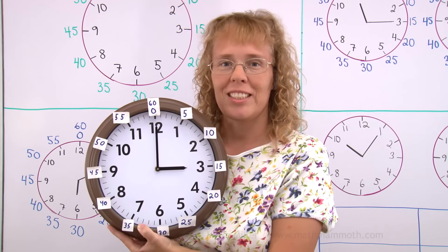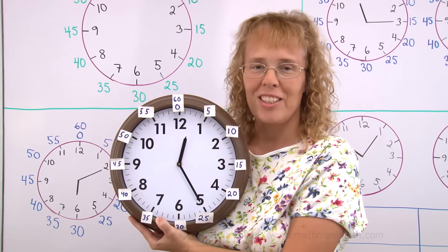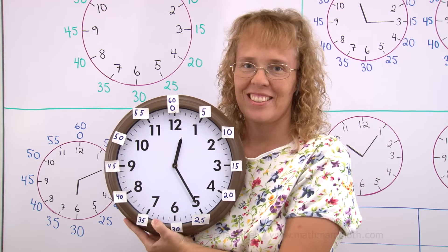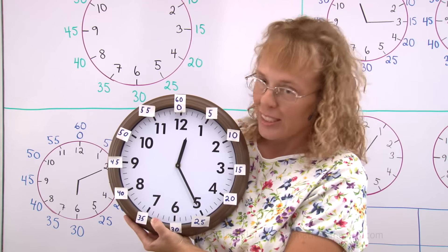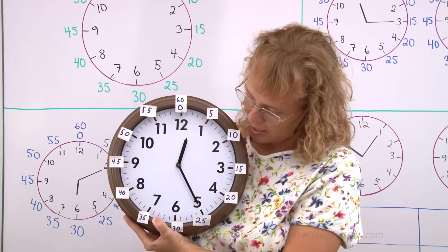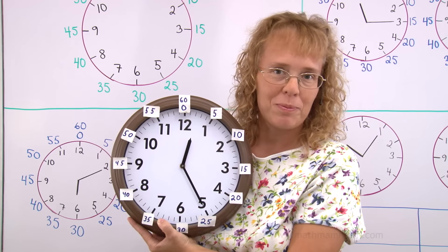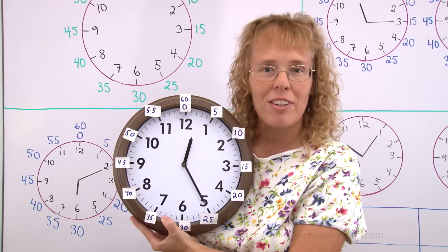Now let's do some few exercises here. What time is it now? Can you tell? Look at the hour hand. It's between 12 and 1. That means 12 hours. And the minute hand is pointing to 25. Not 5, but 25. The time is 12:25.